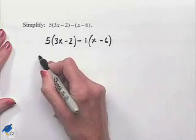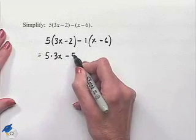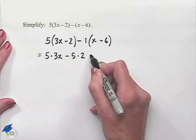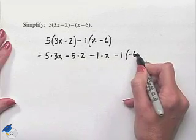Now we're going to distribute 5 times 3x minus 5 times 2 minus 1 times x minus 1 times negative 6.